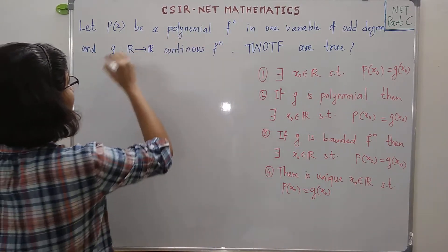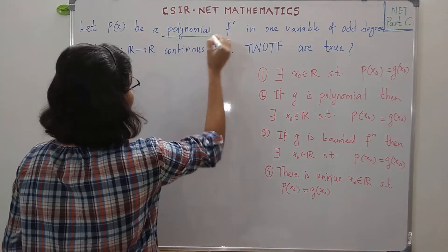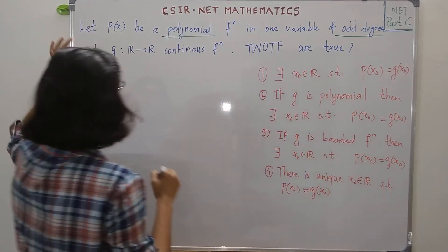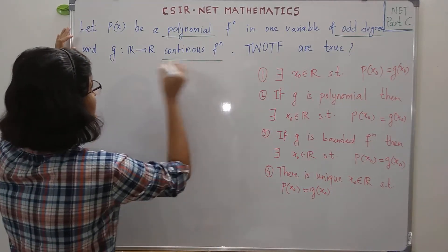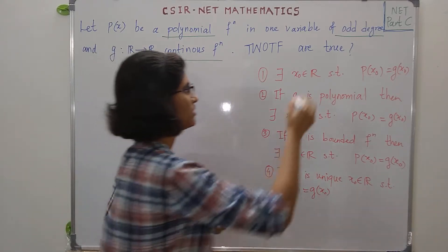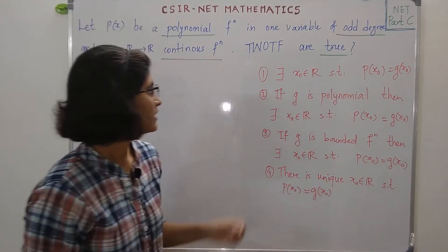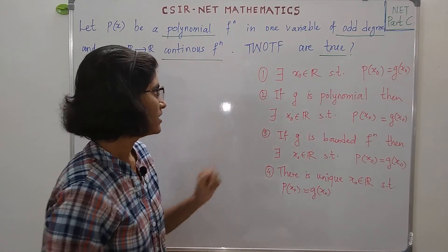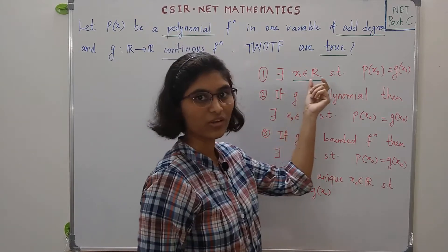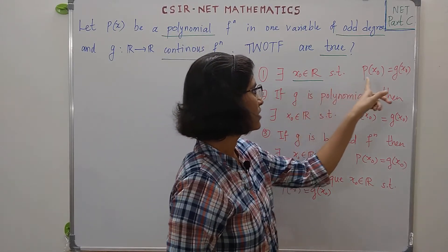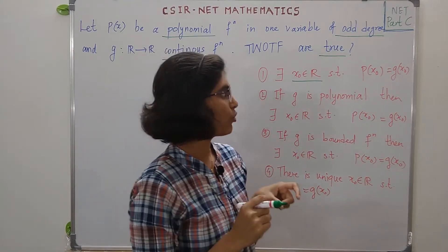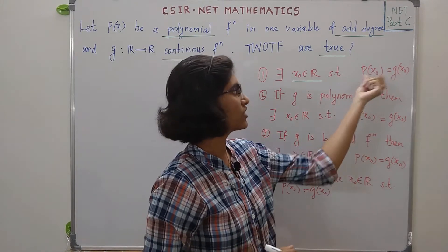We have given P(x), a polynomial in one variable of odd degree, and G is a continuous function from R to R. We need to check which of the following options are true. The first option says that there exists X₀ in R such that P(X₀) is equal to G(X₀) — that means at point X₀ the two functions are the same.